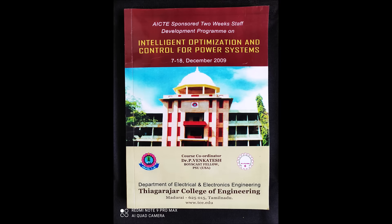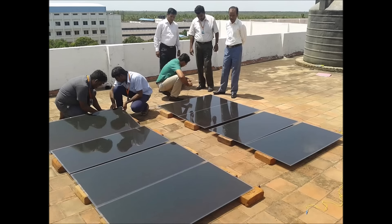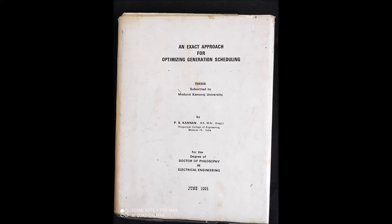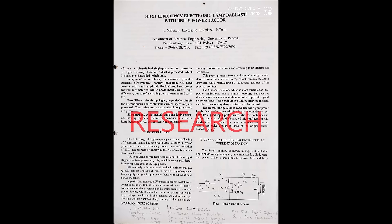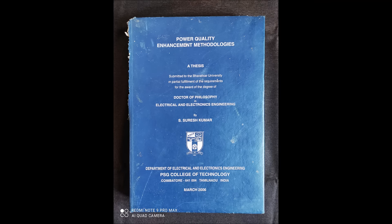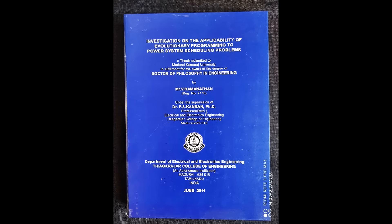There is a difference between research and development and technological development. In research and development, a researcher takes a particular topic, reviews whatever has been published recently on that topic, and considers a basic journal paper publication. Then he makes an analysis, imposes his ideas, and tries to give new approaches or methods, proving that the results are good compared to the existing basic paper, and publishes in a journal.